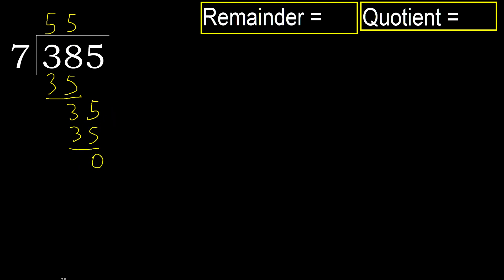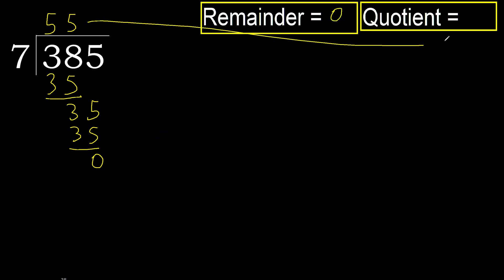Subtract. 0, 0. There is no next number, therefore finish it. 385 divided by 7 is 55.